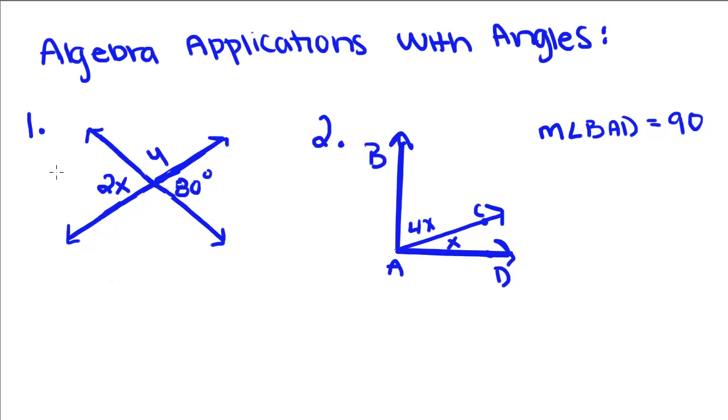For example 1, we know that this angle equals 2x and this angle equals 80 degrees. The first thing we have to notice about these two angles is that they're vertical angles. And if you remember, vertical angles are congruent. This angle is congruent with this angle. If two angles are congruent, that means that their measures are equal. To show that their measures are equal, we're going to take 2x and set it equal to 80. Now, we can use some basic algebra skills to solve for x. If you divide both sides by 2, you get x is equal to 40 degrees.